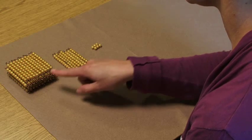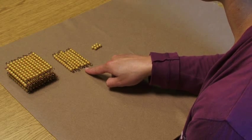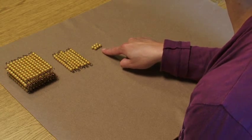We have 500 squares, 7 10 bars, and 6 golden unit beads.